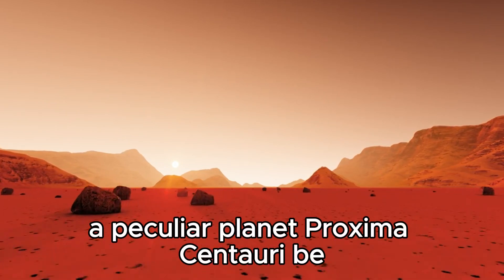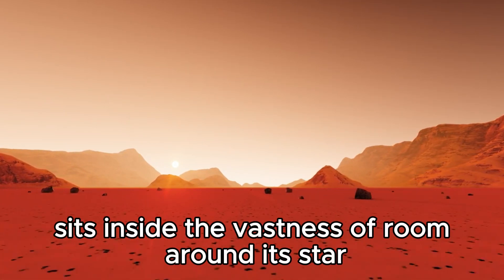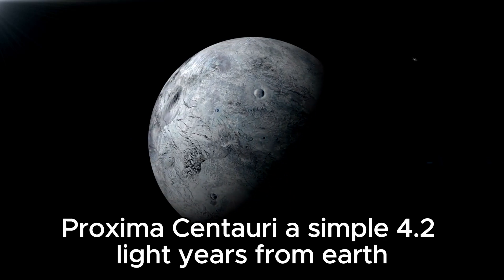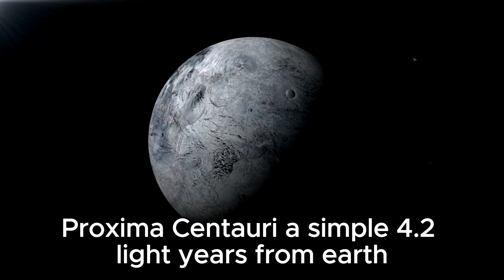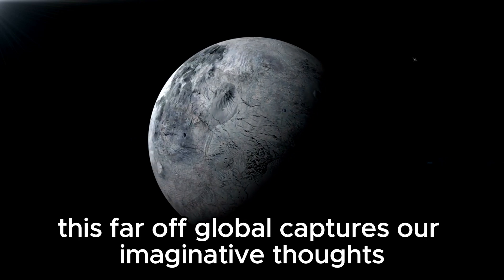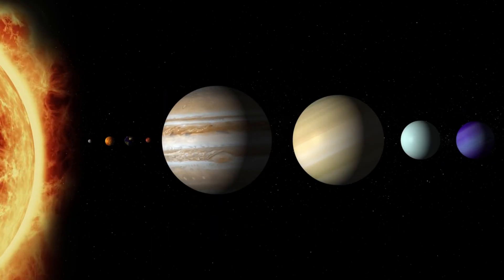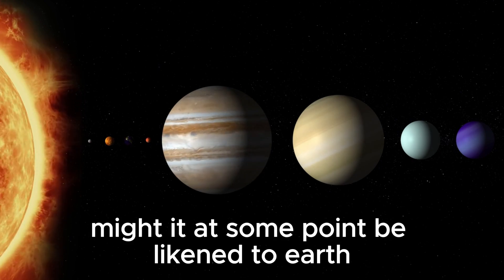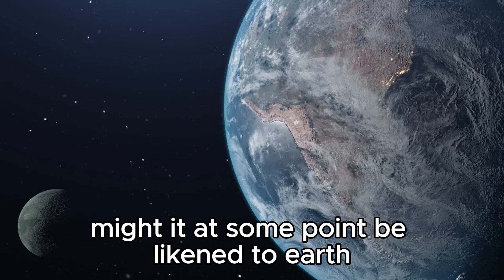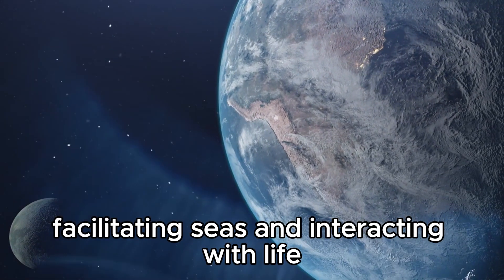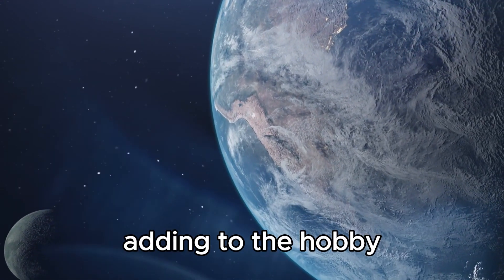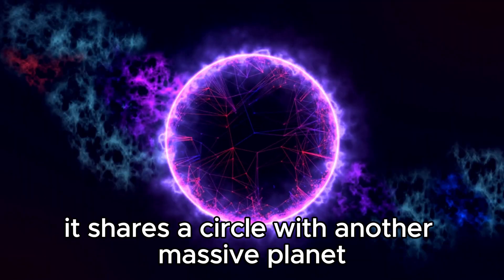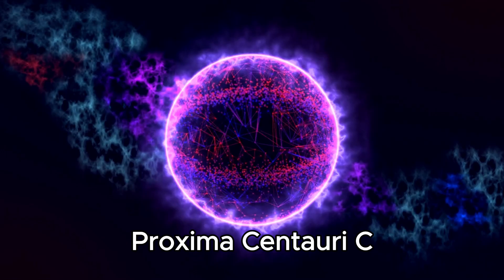Proxima Centauri b sits within the vastness of space around its star, Proxima Centauri, a mere 4.2 light-years from Earth. This distant world captures our imagination, raising questions concerning its similarity to our planet. Might it be likened to Earth, hosting oceans and life? Adding to the intrigue, Proxima Centauri b is not alone - it shares its system with another massive planet, Proxima Centauri c.